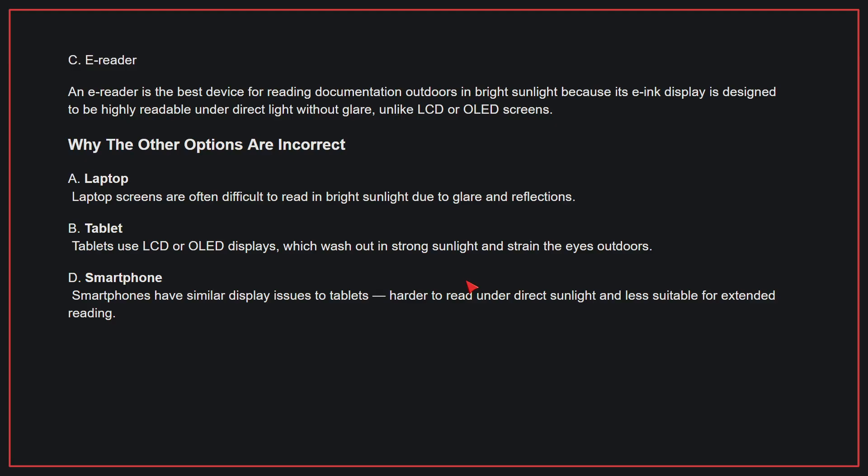Why the other options are incorrect: A, laptop — laptop screens are often difficult to read in bright sunlight due to glare and reflections. B, tablet — tablets use LCD or OLED displays, which wash out in strong sunlight and strain the eyes outdoors. D, smartphone — smartphones have similar display issues to tablets, being harder to read under direct sunlight and less suitable for extended reading. Therefore, the correct answer is C.